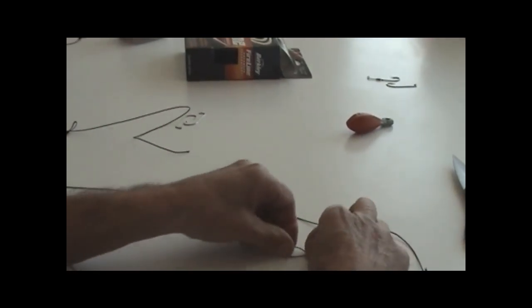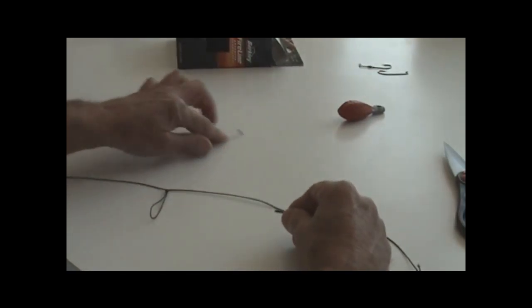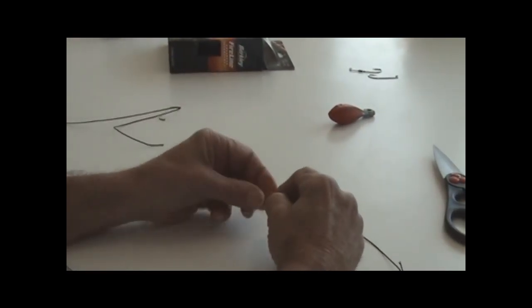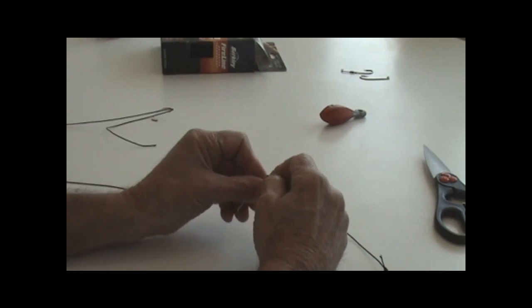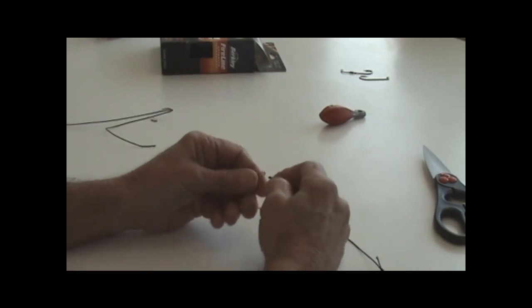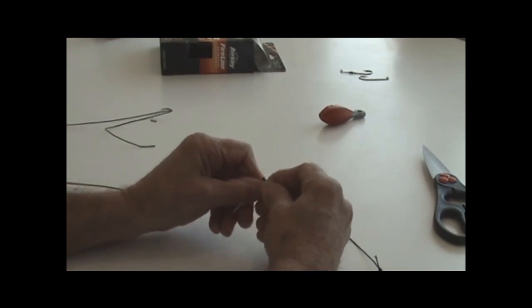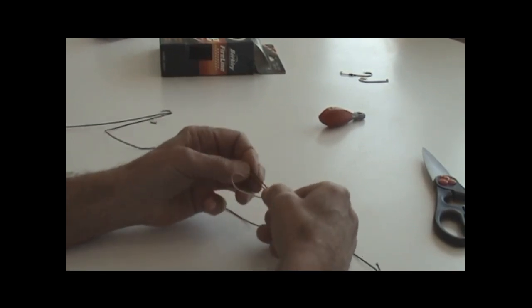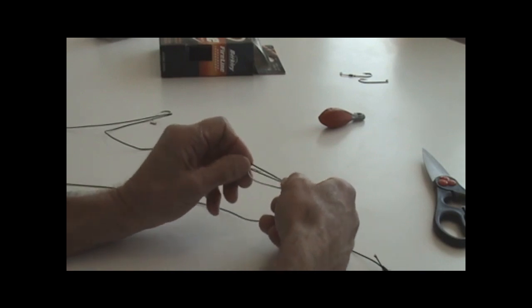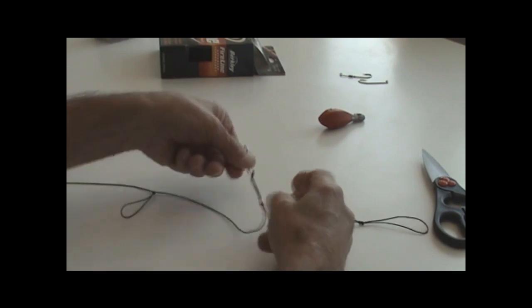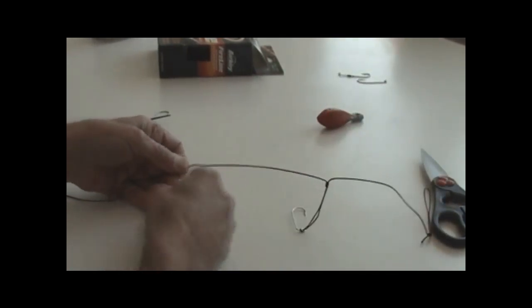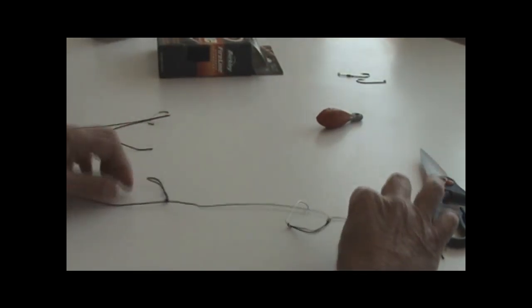Tie an end loop, just run it through the eye, pass the hook through the loop and draw it down. And this way you have a jig hook. Place one on the other loop and go fishing, and you will have a jig rig.